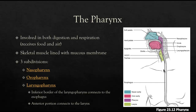Next, let's move to the pharynx, which is involved in both digestion and respiration — food, fluid, and air all pass through this area. It is lined with skeletal muscle and a mucous membrane, and is divided into three regions: the nasopharynx (posterior to the nasal cavity), the oropharynx (posterior to the oral cavity), and the laryngopharynx (posterior to the larynx). The laryngopharynx connects inferiorly to the esophagus. Inhaled air moves into the larynx and trachea, while food and fluid move into the esophagus.